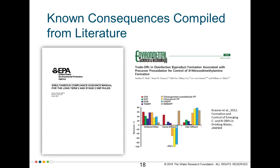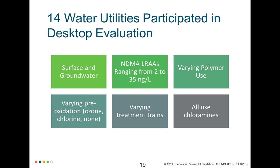We also surveyed existing documents discussing simultaneous compliance for different control strategies that could be implemented for NDMA — a classic example being the simultaneous compliance guidance manual for the Long-Term 2 and Stage 2 DBP rules. We tabulated information from those documents to collate in one place the simultaneous compliance, risk trade-offs, and operational considerations associated with NDMA control.